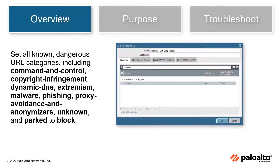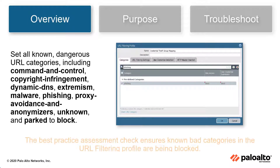The best practice URL filtering profile sets all known dangerous URL categories — including command and control, copyright infringement, dynamic DNS, extremism, malware, phishing, proxy avoidance and anonymizers, unknown, and parked — to block.